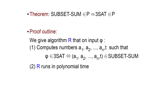The proof outline is that we are going to exhibit an algorithm R that, on input a formula phi, computes numbers a1, a2, ..., an and a target t such that phi is in 3SAT if and only if you can find a subset of these numbers which sums to t — if and only if the tuple (a1, a2, ..., an, t) is in Subset Sum. R should also run in polynomial time.